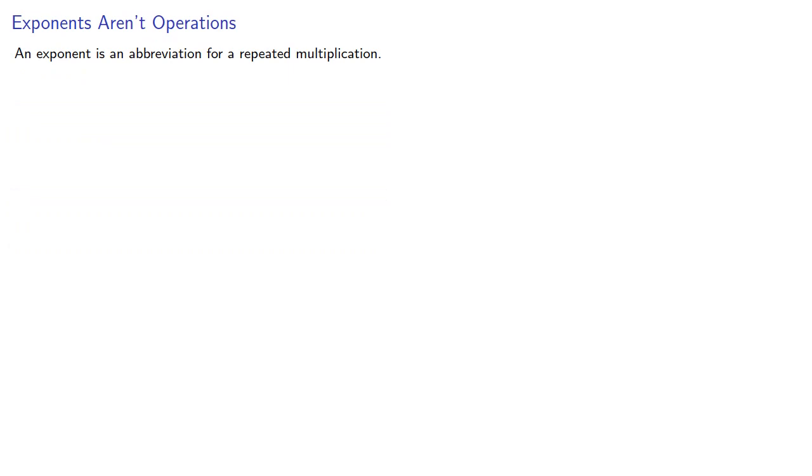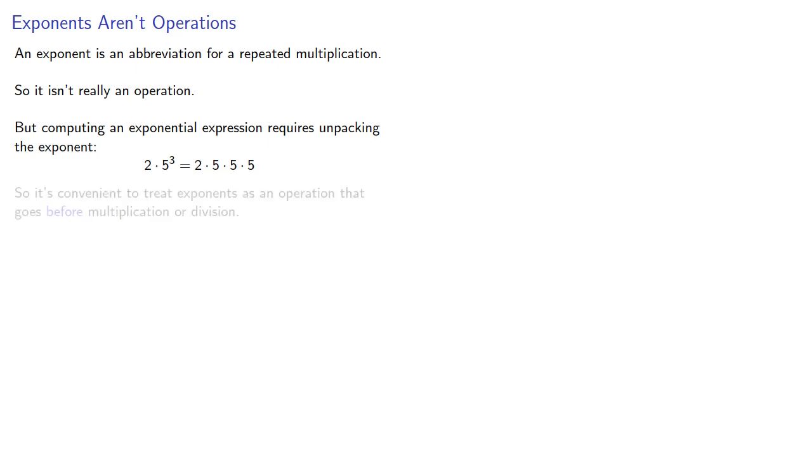Remember, an exponent is an abbreviation for repeated multiplication, so it isn't really an operation. But computing an exponential expression requires unpacking the exponent. So five to the third is really three factors of five multiplied together. It's convenient to treat exponents as an operation that goes before multiplication or division.